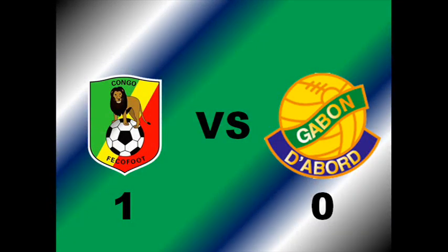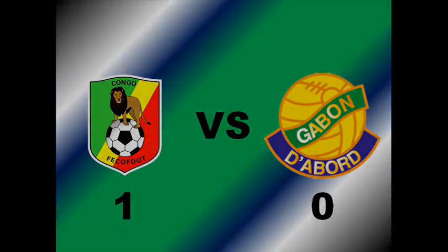El 21 de enero, Guinea Ecuatorial y Burkina Faso continuaron con la racha de empates, solo que esta vez no se anotaron goles. Más tarde ese día en el grupo A, el Congo venció a Gabón por un solitario gol.